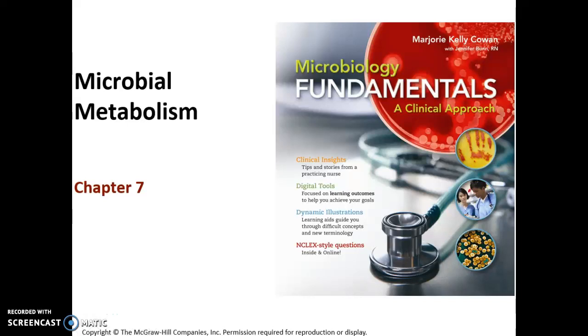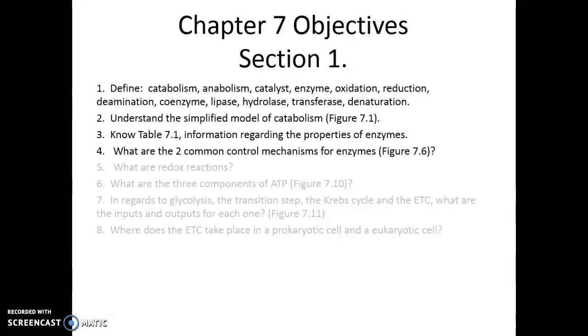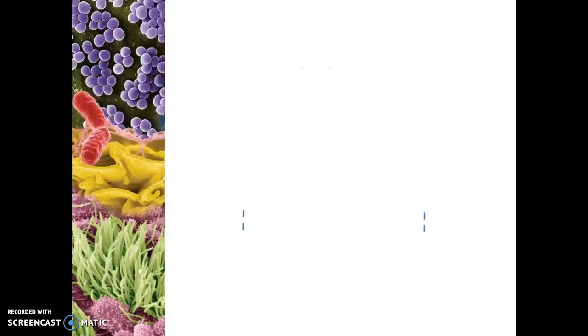All right, here is Chapter 7, Part 1, beginning the chapter on microbial metabolism. The first four objectives here will be covered in Section 1. With Objective 1, all of those different terms would be covered throughout the entire chapter. So really what we're going to talk about this first section is just the idea of metabolism and anabolism as part of the overall idea of metabolism, and then enzymes and how enzymes are so important in the processes of the chemical reactions of metabolism.